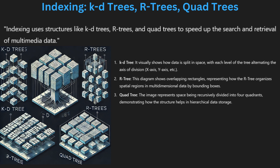Indexing is vital for efficiently searching and retrieving images in large multimedia databases. Structures like the KD tree, R tree and quad tree are used to organize data spatially. KD trees are especially helpful for nearest neighbor searches where the system finds the closest match to a query. R trees are useful for multidimensional data, often applied in geographical or spatial searches. Quad trees divide data into four quadrants, making retrieval faster by narrowing down the search area. These indexing structures improve the speed and accuracy of image retrieval processes.